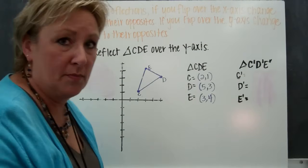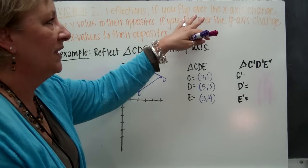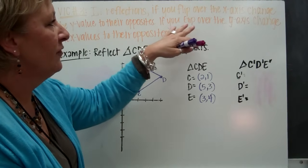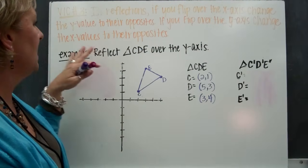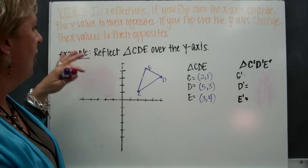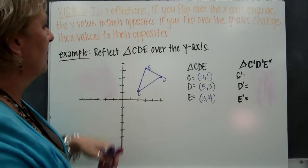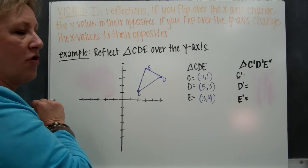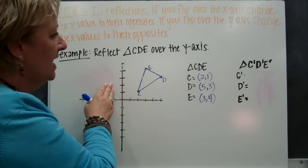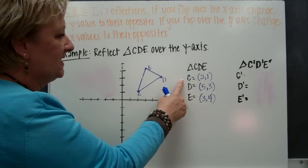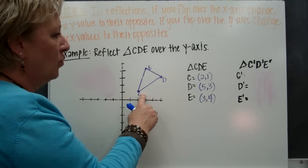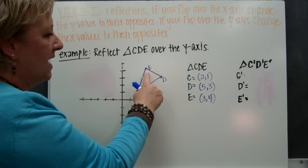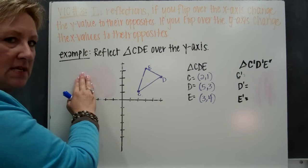Very important concept number three. In a reflection, if you flip over the X axis, you're going to change the Y values to their opposites. And if you flip over the Y axis, you're going to change the X values to their opposites. For example, let's look at triangle CDE and reflect it over the Y axis. Angle C is at (two, one), triangle D is at (five, three), and angle E is at (three, four).